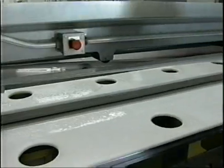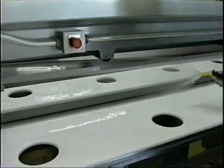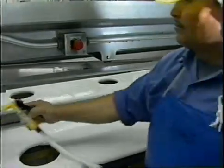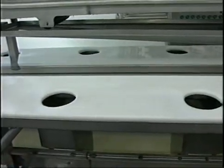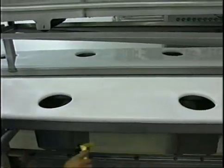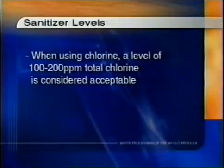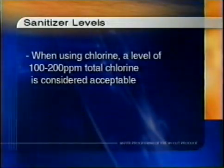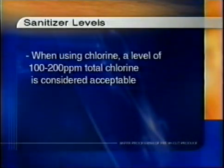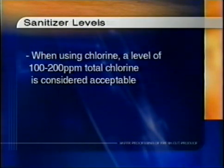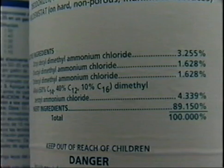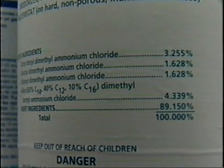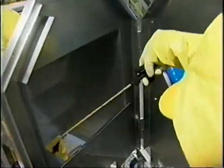It's important that the level of sanitizer used be adequate to kill the targeted microbe, which could be Salmonella, Listeria monocytogenes, or E. coli O157:H7, or any other pathogen. When using chlorine, a level of 100 to a maximum of 200 parts per million total chlorine is typically used. Personnel should follow label instructions when mixing and applying the sanitizers used. All sanitizer levels should also be checked and recorded.